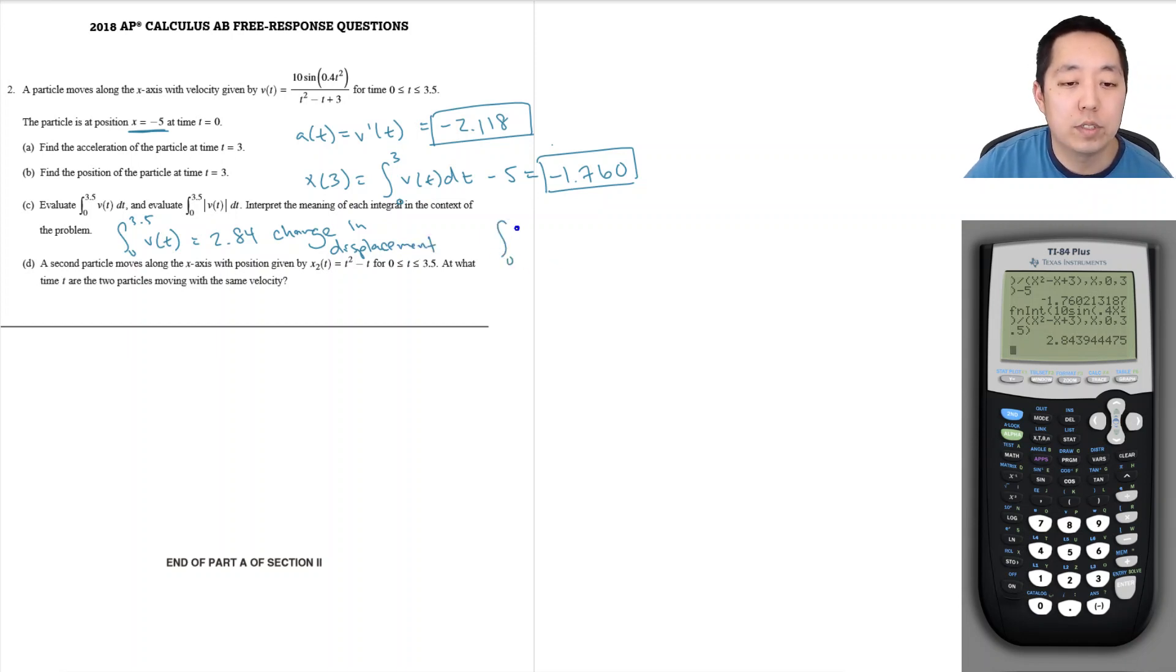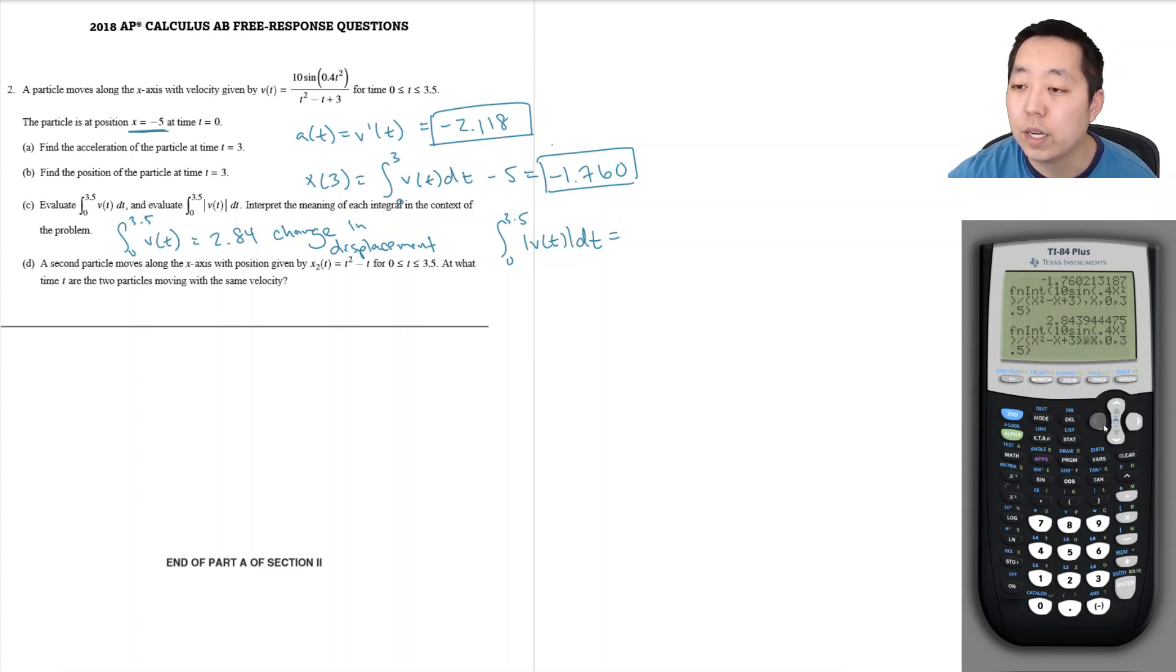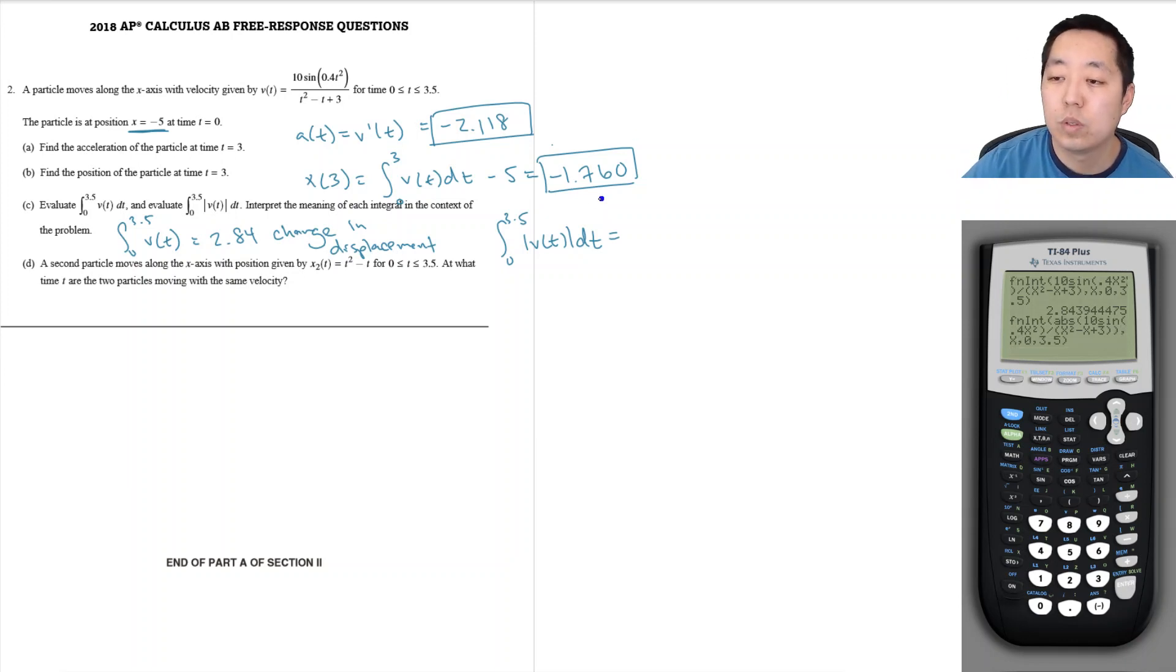Whereas the integral of 0 to 3.5 absolute value of v of t. When you do absolute value, it's total distance traveled. And you can do that in your calculator by just putting in absolute value. That is 3.737 total distance traveled.